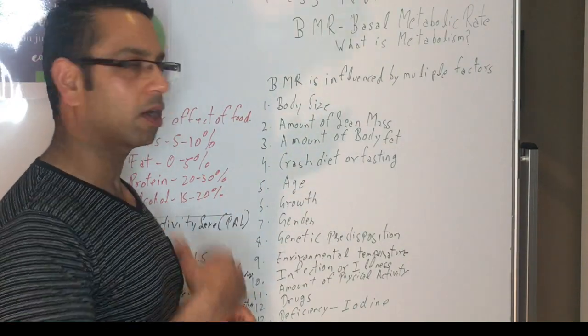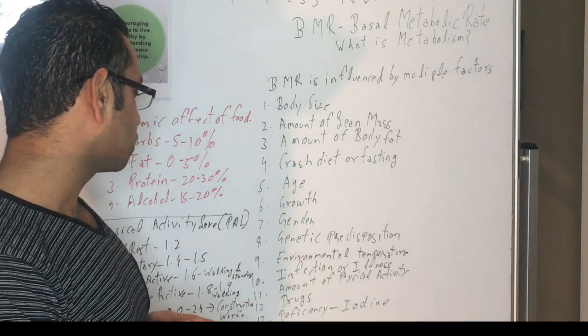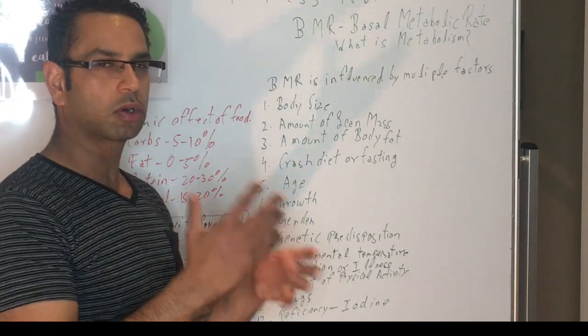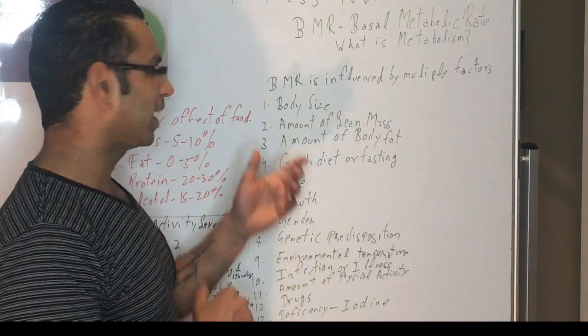The ninth one is environmental temperature. So if you're in a really hot or cold temperature, your body has to work a little bit harder to maintain the normal temperature, and that can also affect the BMR.